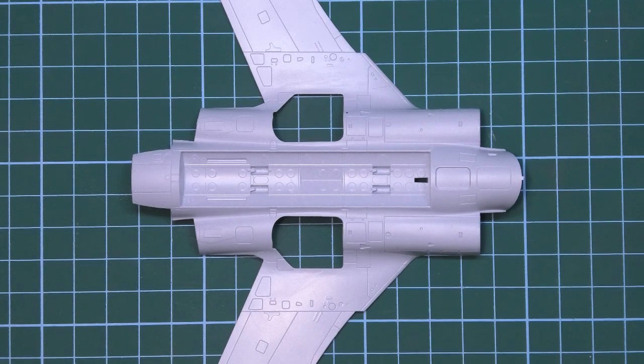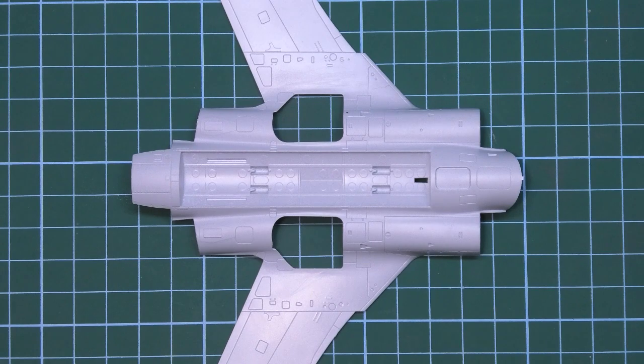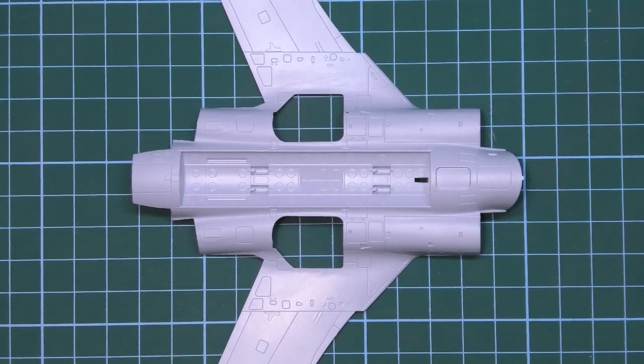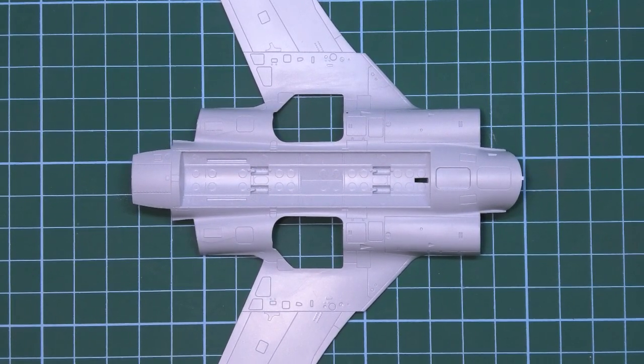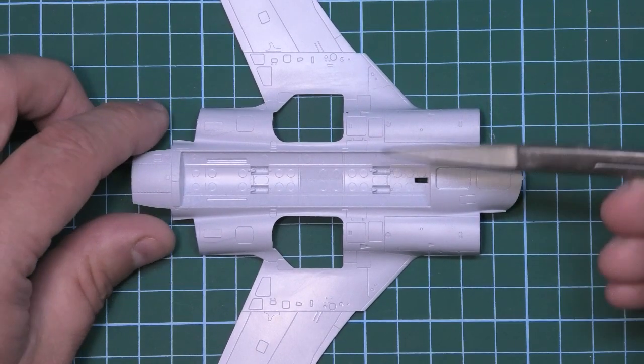It was actually intended originally to destroy the Kirov class cruisers with a single large nuclear weapon. Later on in RAF service it went on to carry the WE-177 in a twin arrangement at the front of the bomb bay.